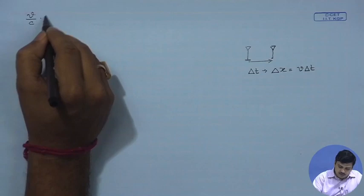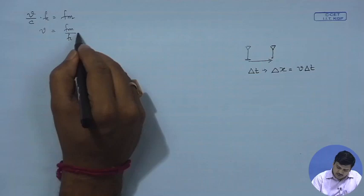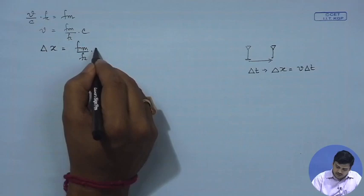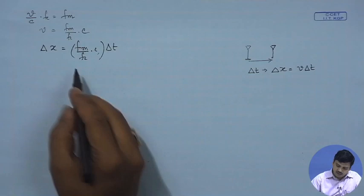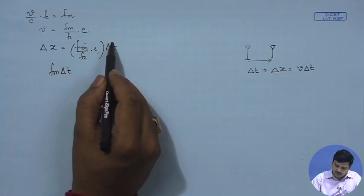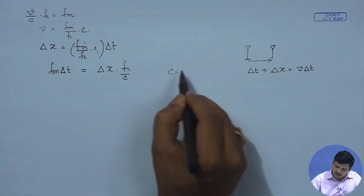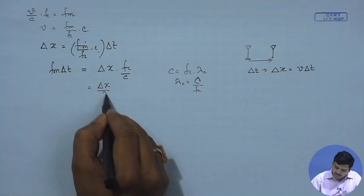Since we know that v/c times f_c equals f_m, we can write v = f_m / f_c times c, and therefore delta_x = f_m / f_c times c times delta_t. This means f_m times delta_t equals delta_x times f_c divided by c. And since c = f_c times lambda_c, we can write lambda_c = c / f_c, or equivalently f_m delta_t equals delta_x / lambda.